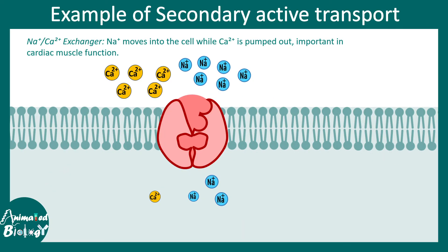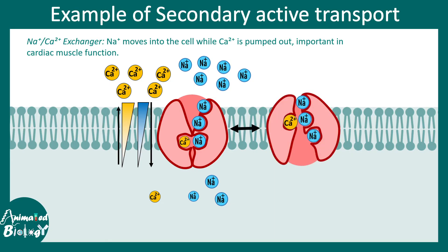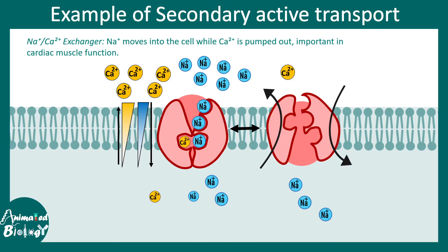Another example of secondary active transport can be found in cardiac muscles. In the cardiac muscle, calcium and sodium move in different directions: calcium moves up the gradient and sodium moves down the gradient. From the extracellular part, 3 sodium ions bind to the carrier, and 1 calcium ion from the intracellular part binds to the carrier. This triggers a conformational change which releases calcium on the outer side and 3 sodium on the inner side. Notice that the 2 molecules moved in opposite directions — calcium moved out and sodium moved in.